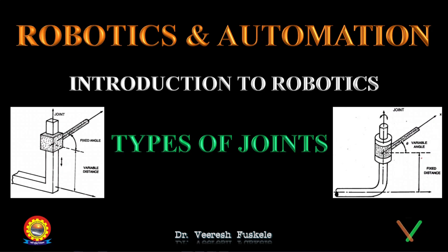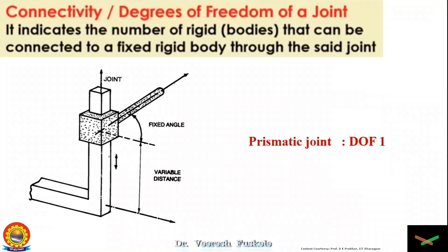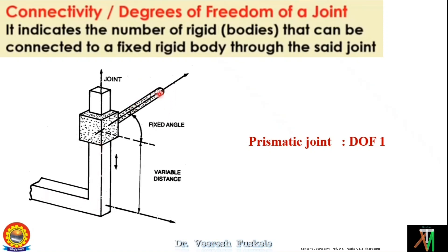Next we move to connectivity and the types of joints. Connectivity simply means that suppose you have two links — one is the fixed link or the input link, and this is the output link or fixed link. Motion has to be transferred from input to output, so we need to connect these two.